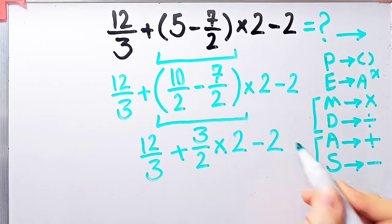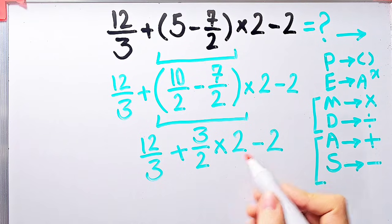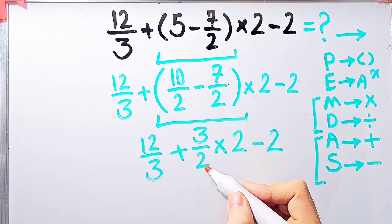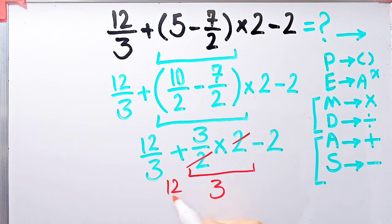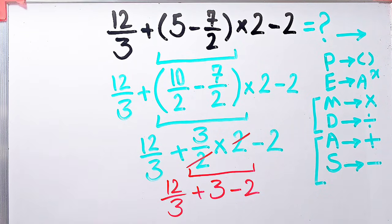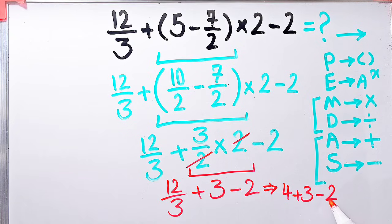Now we have addition, multiplication, and subtraction. First we simplify the multiplication because it has higher priority: 3 over 2 times 2 equals 3. Now the question is 12 over 3 plus 3, then minus 2. 12 over 3 equals 4, so the question is 4 plus 3 minus 2. 4 plus 3 equals 7, and 7 minus 2 equals 5. The final answer of this question equals 5.